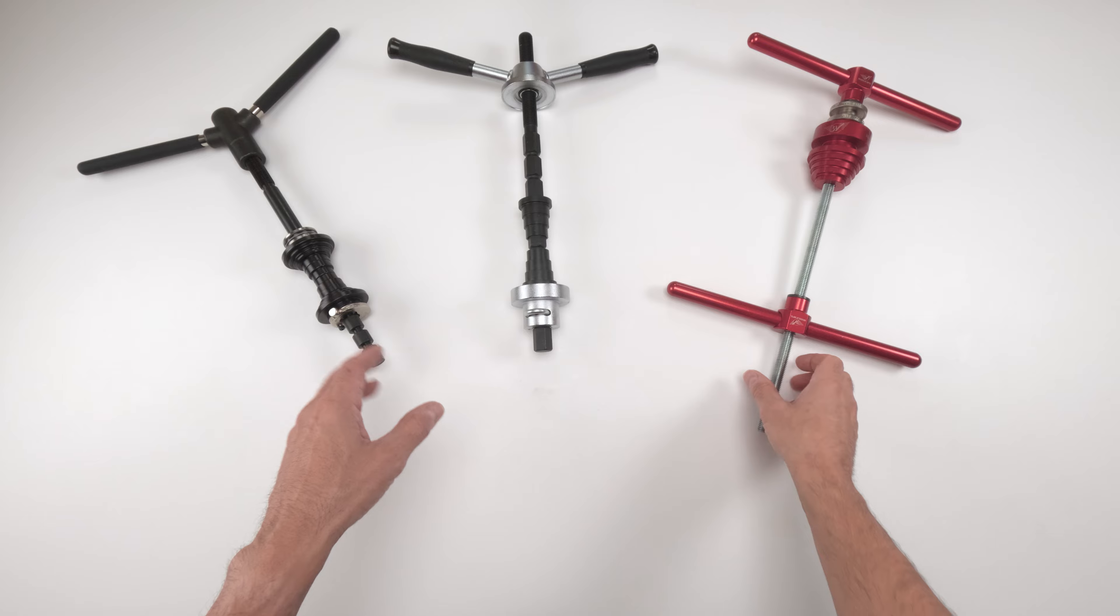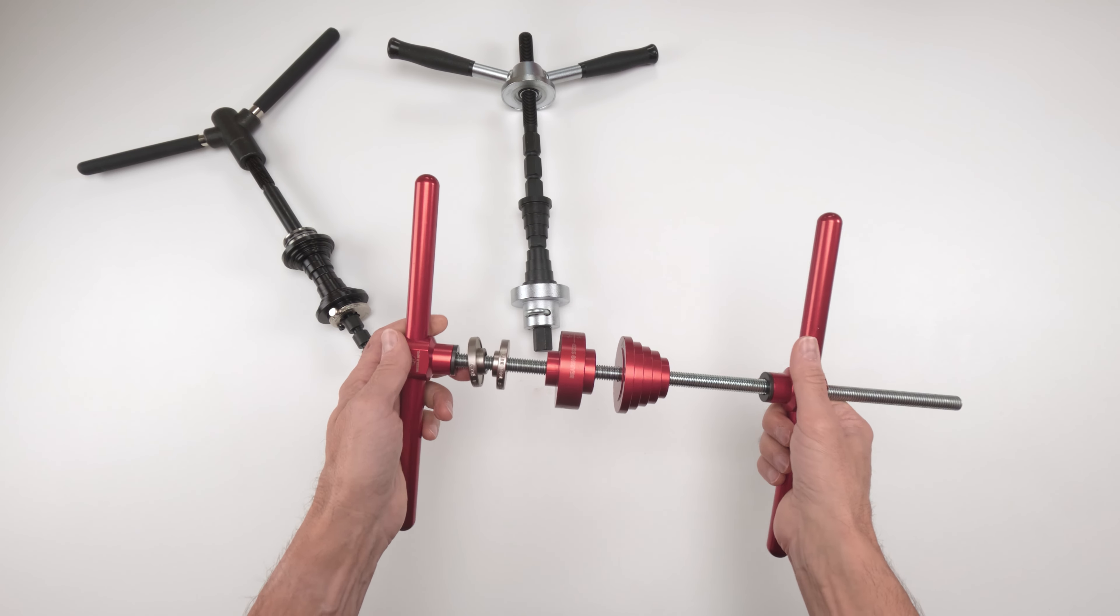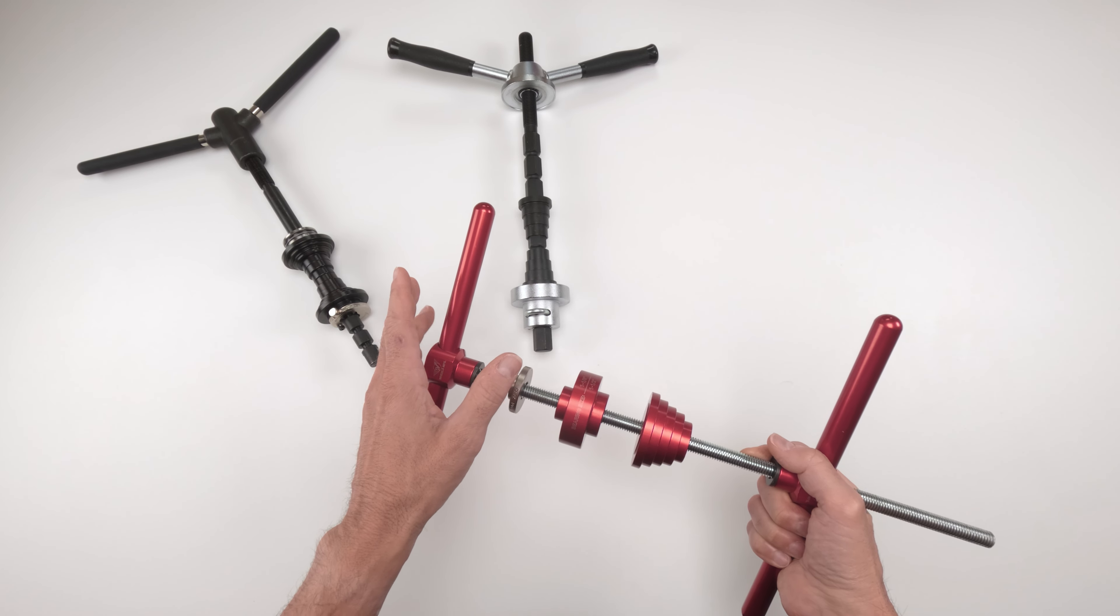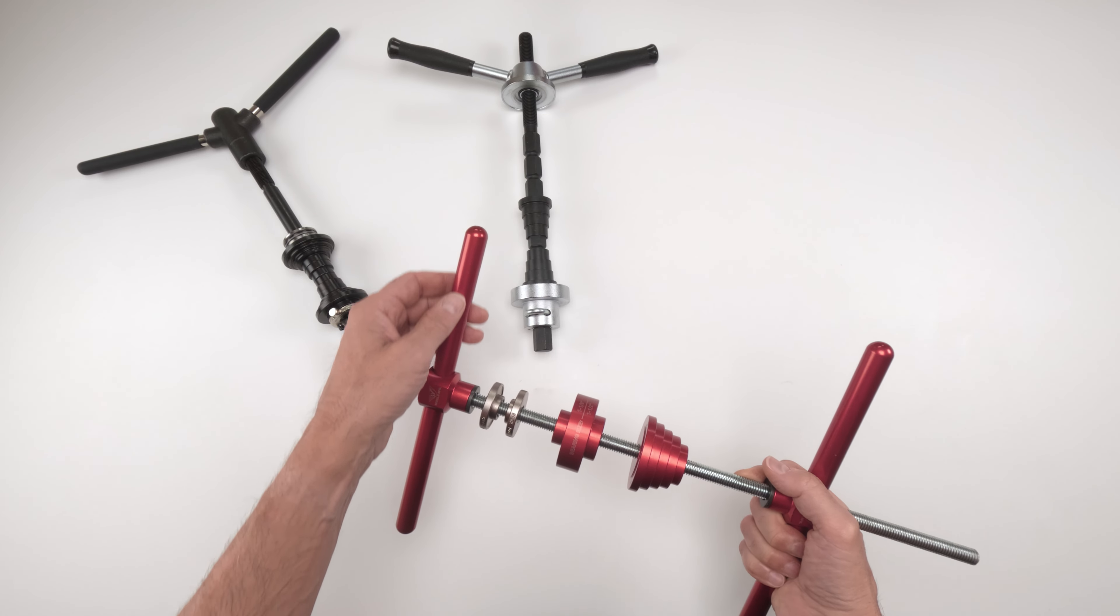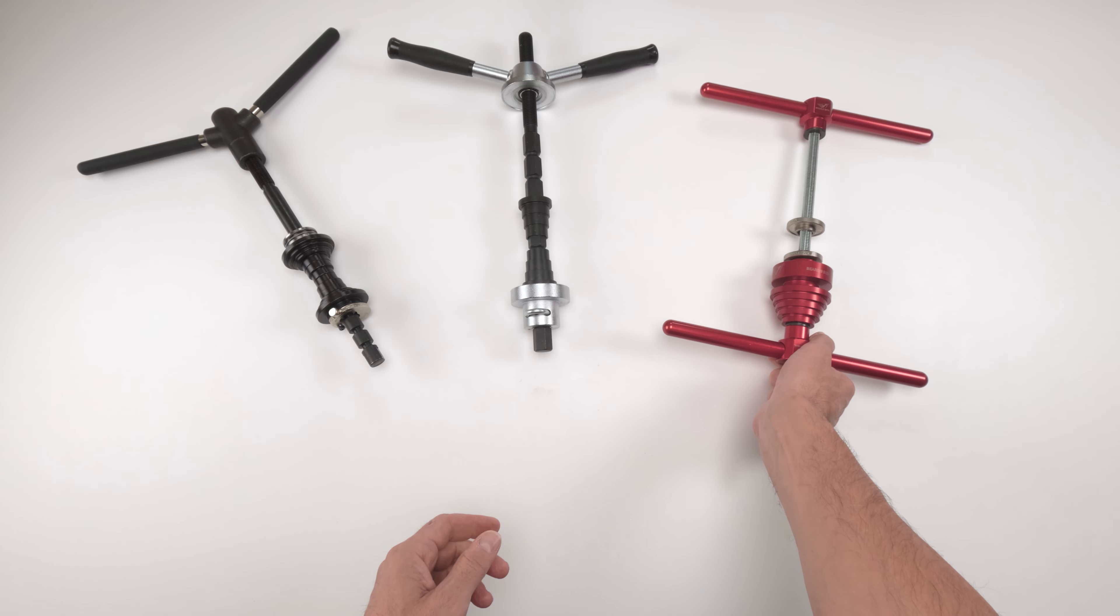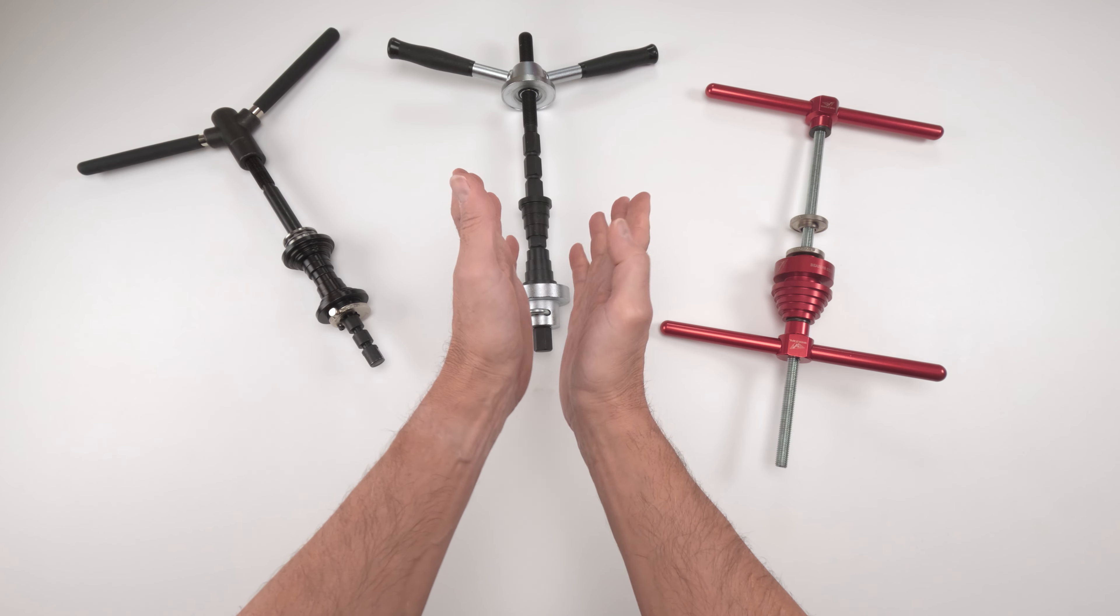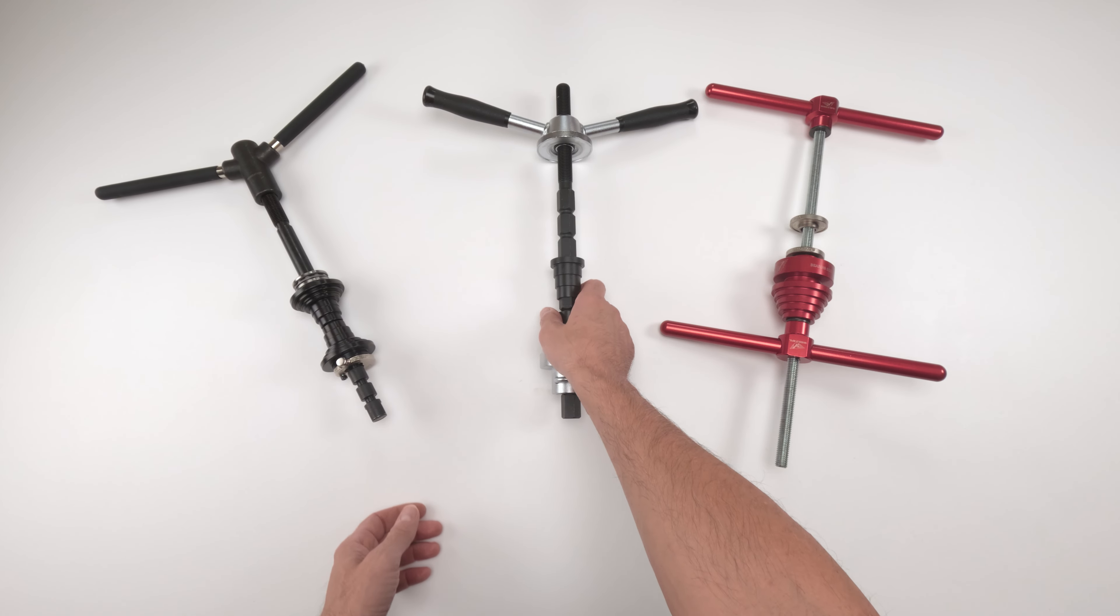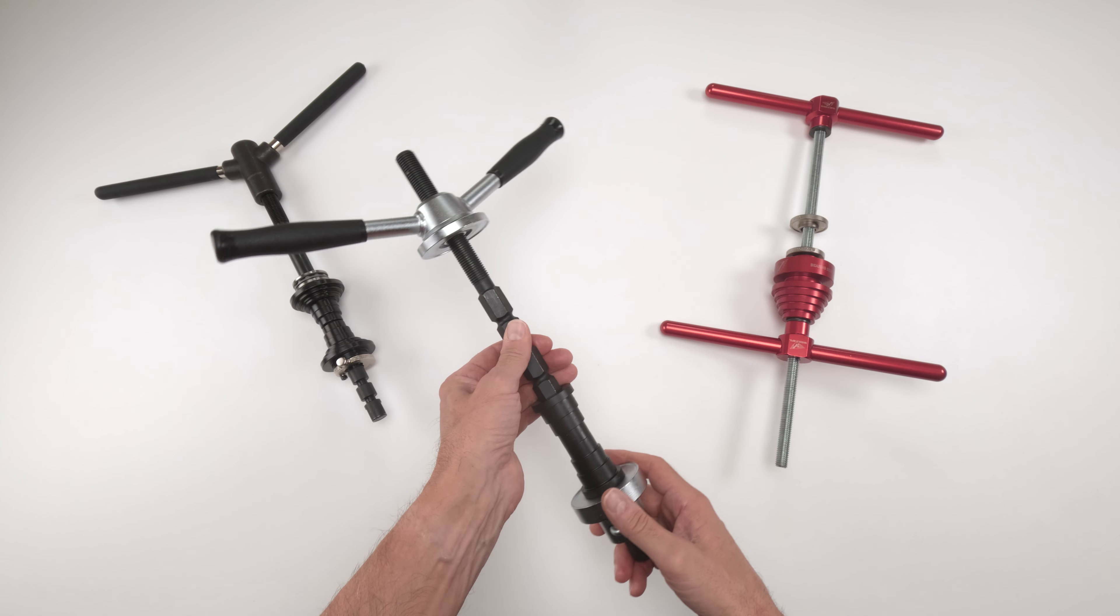As for the differences between these tools, again, this is the Wheels Manufacturing. Great tool, super solid, but it has one limitation, and that is these handles. With some frames, you won't come across this often, but you can come across this, this handle is going to be too long. It's too straight, too long, and it could actually bump into the actual frame before you're done. So you have these styles, the Y styles, right? That avoids the issue of running into the frame. Now, you've got two of them over here.